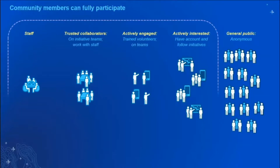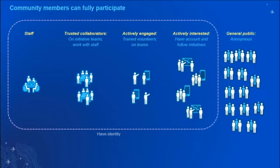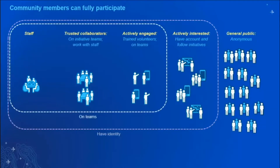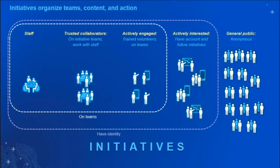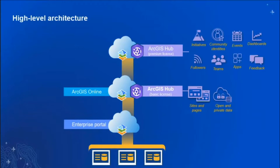The good news is with the premium version of the product, all of those parties can have an identity in your system and work on the same platform. You can share content to those people, and even better, you can think of them as co-creators — add them to teams, organize them, and task them with things you need. We tend to organize our teams and community around something called initiatives. The premium license of ArcGIS Hub includes that initiative framework, identities for community members outside your organization, the ability to form teams, have events, gather feedback, and integrate feedback tools.